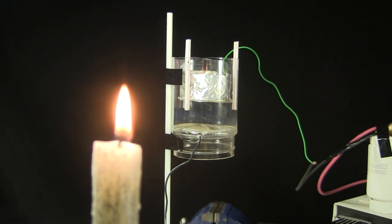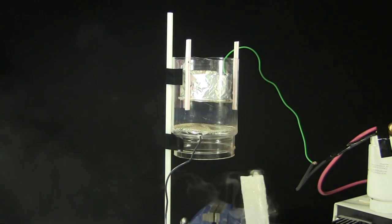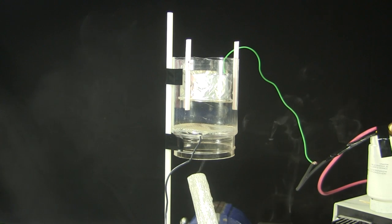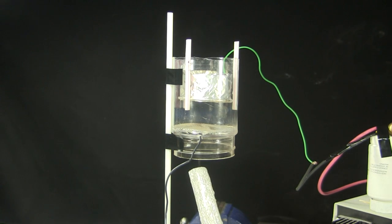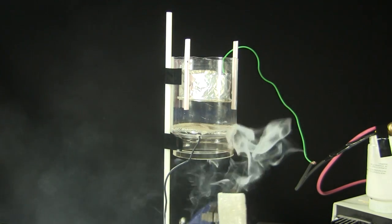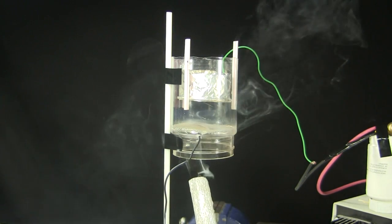This candle doesn't give off much smoke, but when I blow it out it does for a while. As you can see there's enough smoke to go all the way through. I turn on the high voltage and do it again. This time nothing comes out the top.